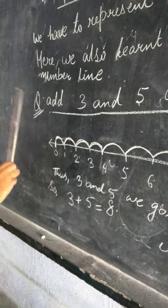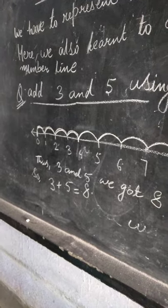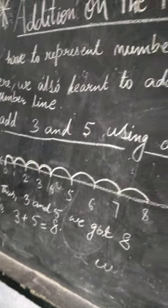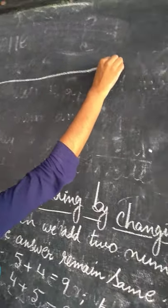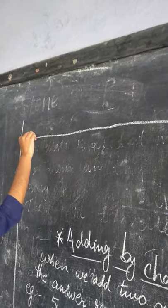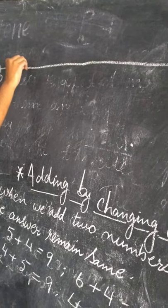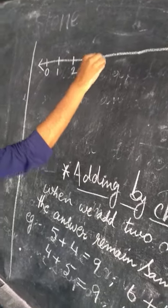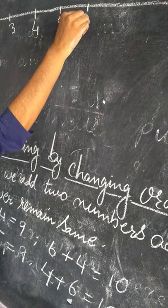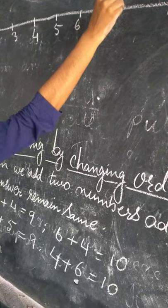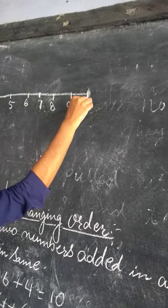Once again, addition on the number line. Firstly we draw a line and represent numbers on the line. Draw the number line like this and represent numbers starting from zero. From zero till ten: one, two, three, four, five, six, seven, eight, nine, ten.